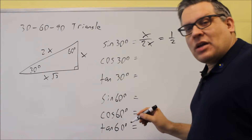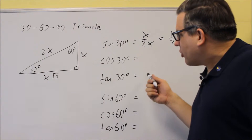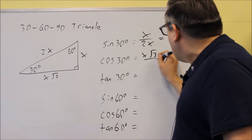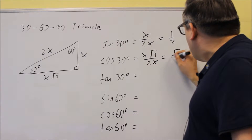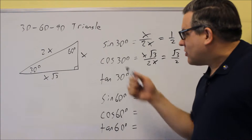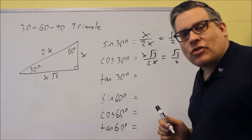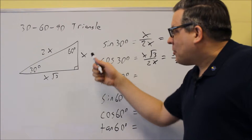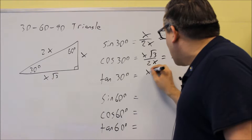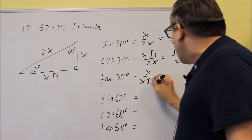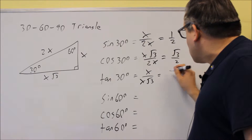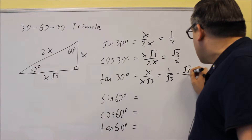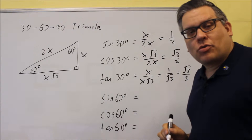Likewise, for cosine 30, that's adjacent over hypotenuse: x√3 over 2x, and you get √3 over 2 as the exact value. For tangent 30, opposite over adjacent, that's x over x√3. The x's cancel and you get 1 over √3, but then you rationalize that and get √3 over 3.